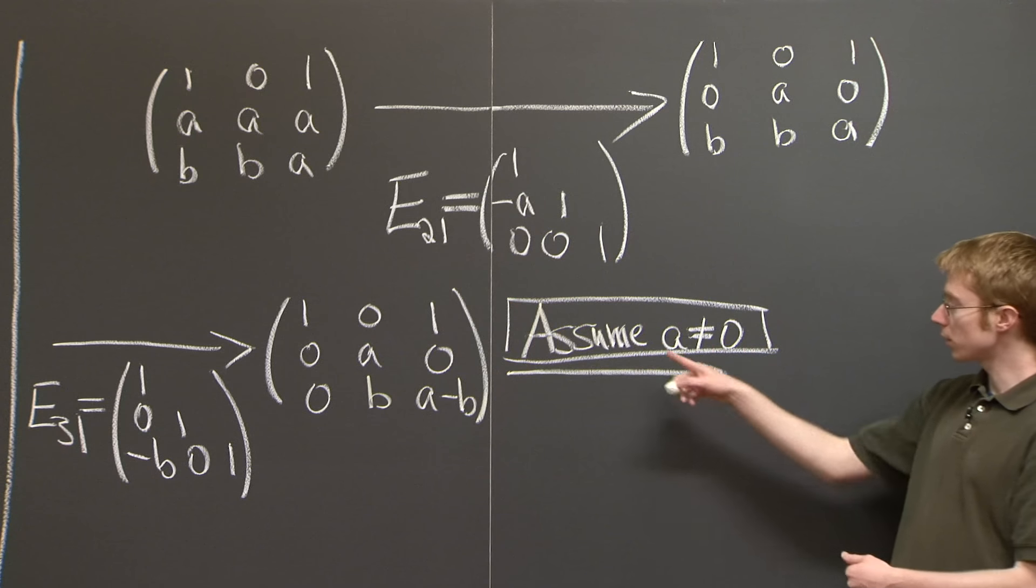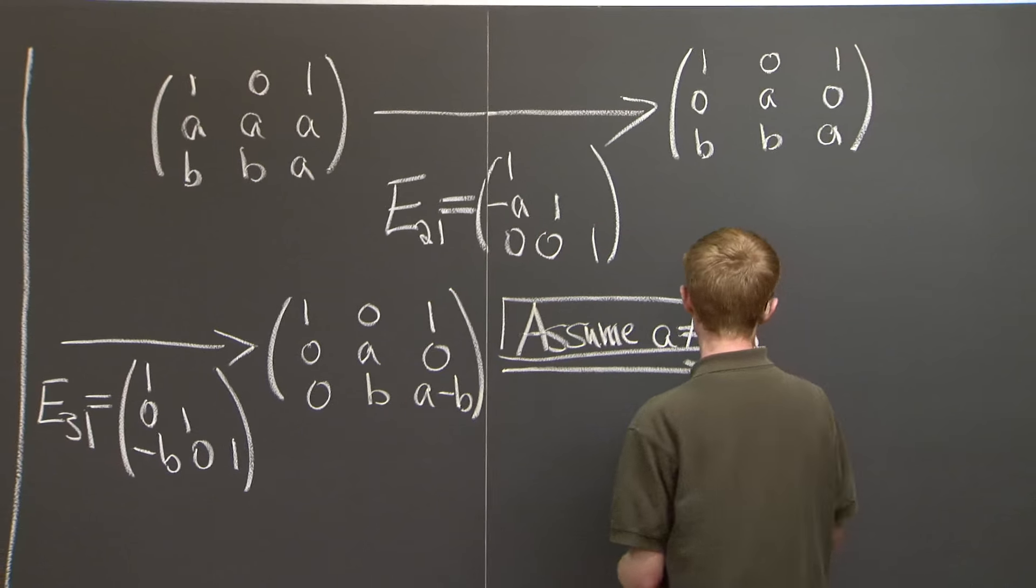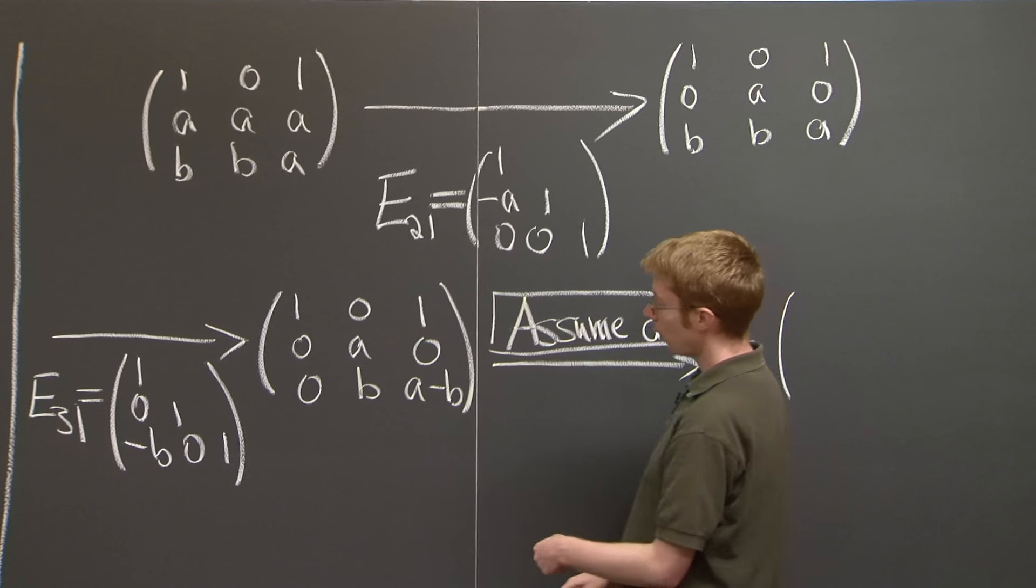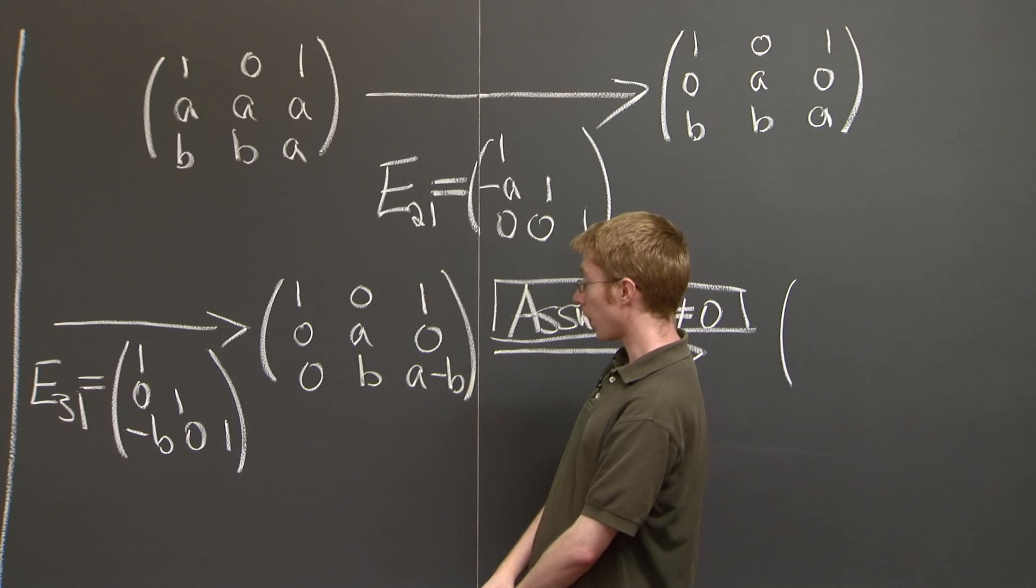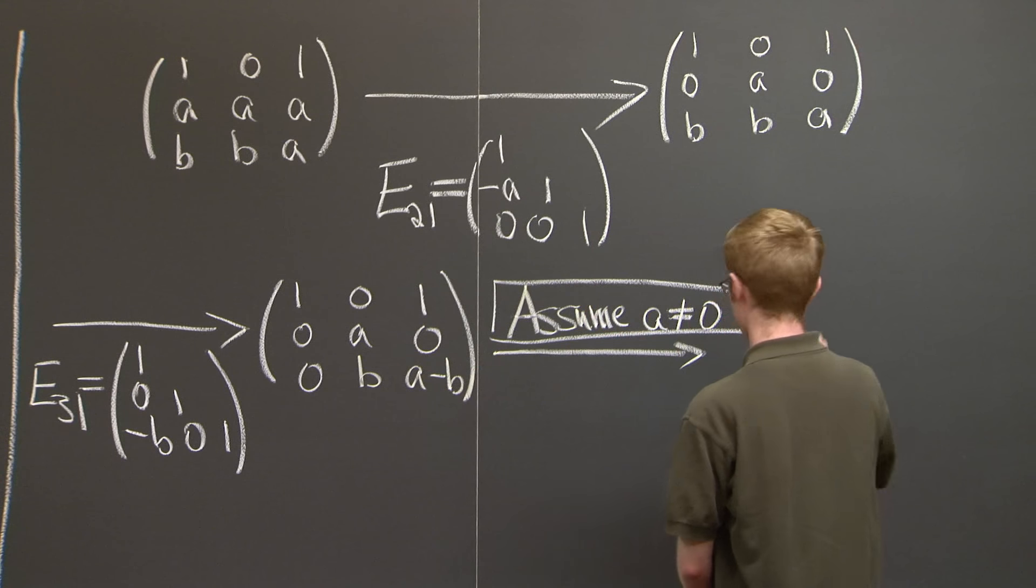assume that a is non-zero in order to keep going. OK? So let's just assume there that a is non-zero. Now, what do we do? Well, we can replace the third row by the third row minus b over a times the second row.